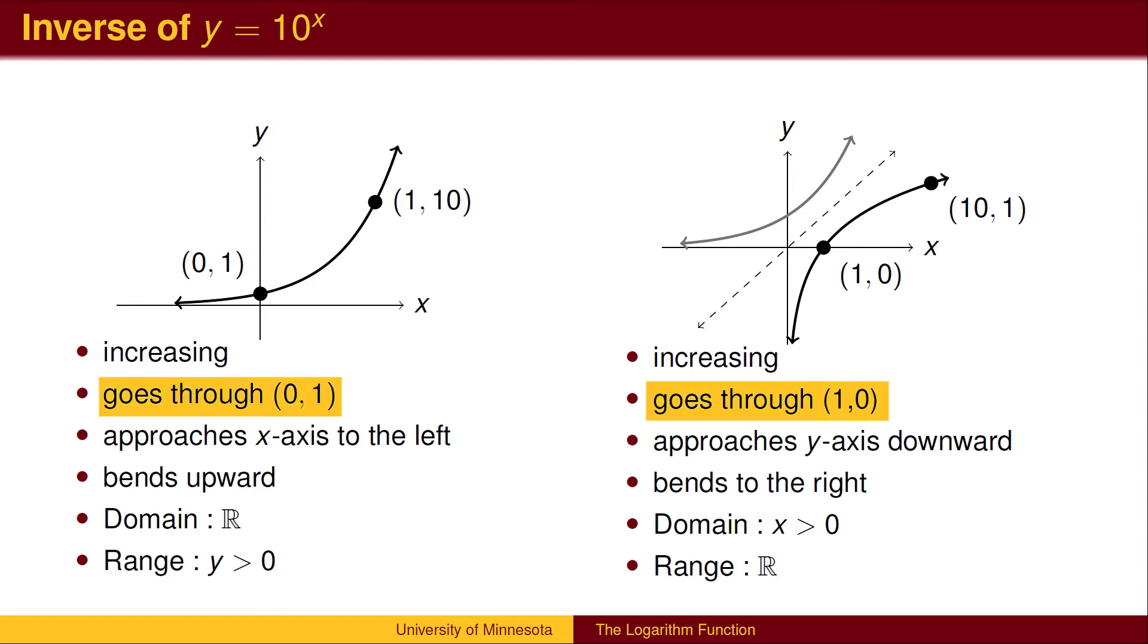The exponential function went through the point 0, 1, so the log function goes through the point 1, 0. The exponential function approached the negative half of the x-axis from above, from the positive side. The log graph approached the negative half of the y-axis from the positive side, from the right. The domain of the exponential function is the range of the log function, and vice versa.